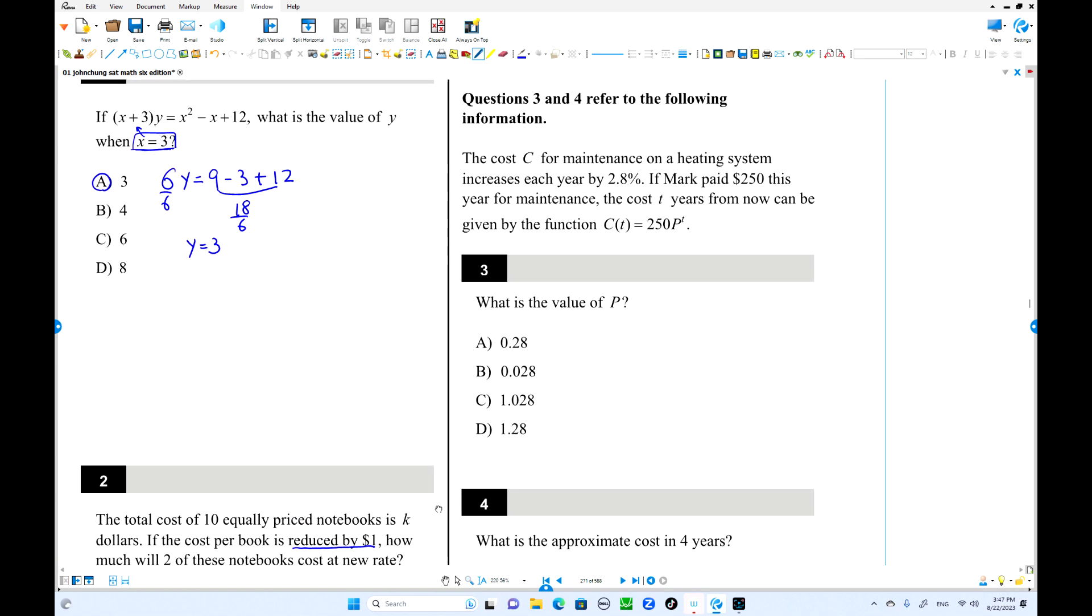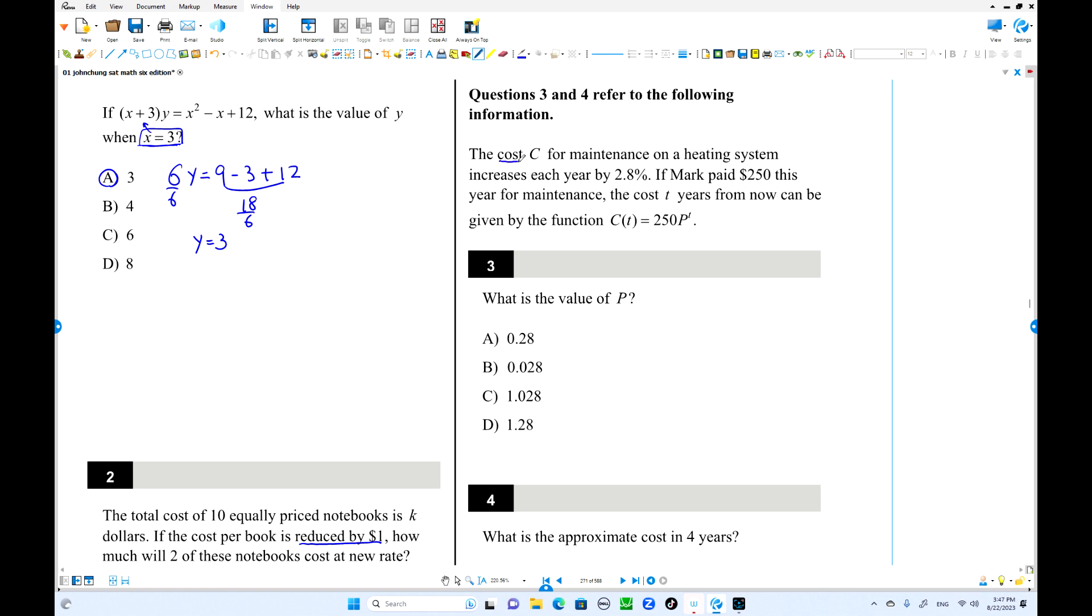Here is number 3. Cost C for the maintenance on heating system increases each year by 2.8%. Mark paid $250 this year. That is the initial value. Years from now on can be modeled this way. This is the exponential function. What is P? Ct equals initially 250. Inside the parentheses is always 1 plus R times T. That's the rate.